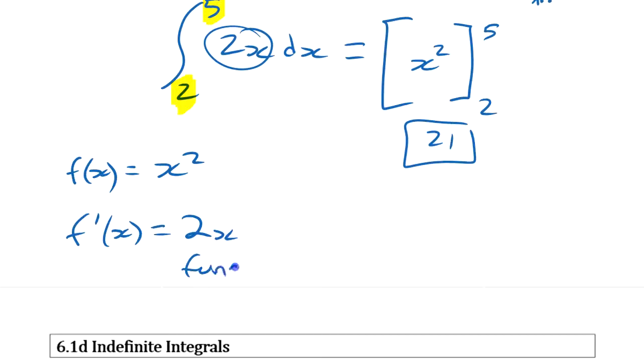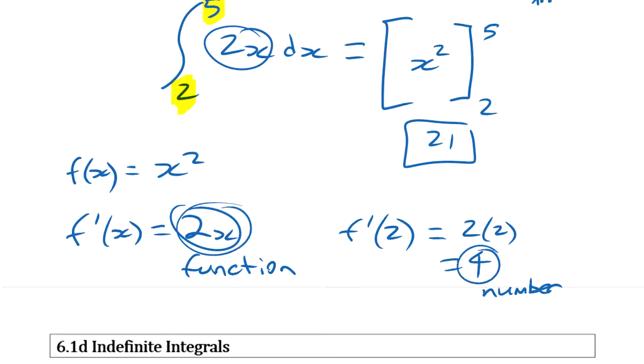That's another function, right? This, 2x, another function. Or you could say, what's the derivative at a certain value, evaluated for a certain value? Well, it's 2 times 2, which is 4. This is a number or a value, right? So the difference between those two things, specific value or another function. This is the same thing here.